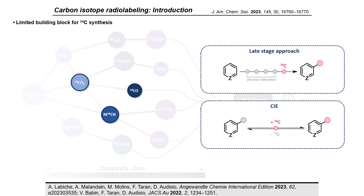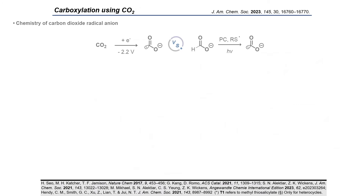That's why in the lab, we aim to develop new labeling strategies using a late-stage carbon isotope exchange strategy, relying on the use of common and affordable carbon-14 building blocks. It is in this context that we were eager to develop a new late-stage labeling carboxylation methodology using the radical anion of carbon dioxide.